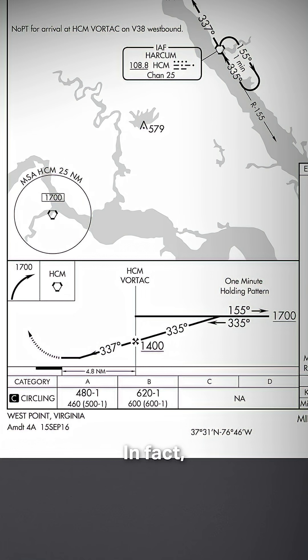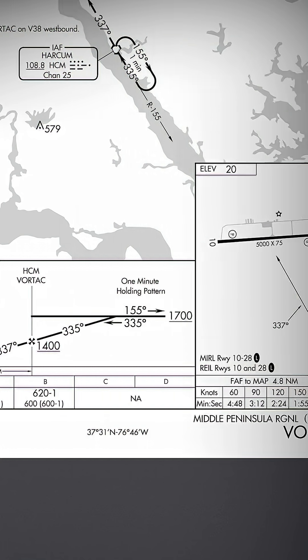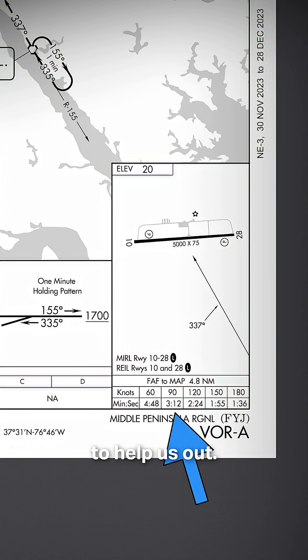Without RNAV, the only way we could identify that missed approach point for this procedure is through timing, and the FAA has given us a timing table to help us out.